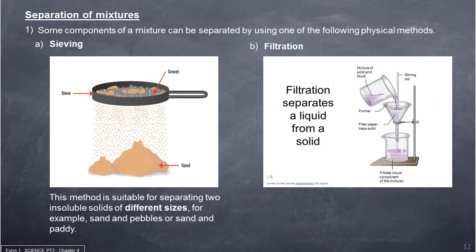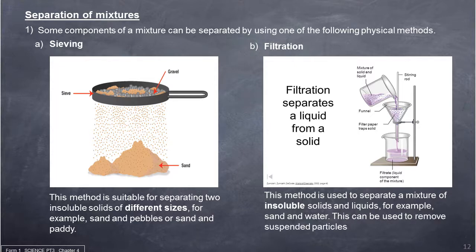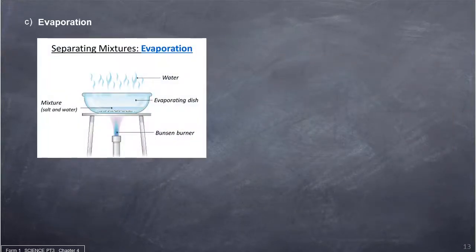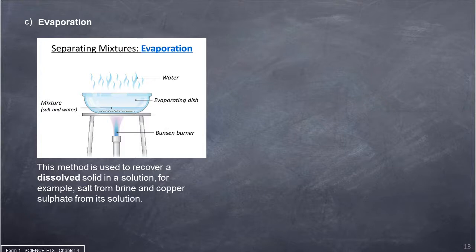Filtration is used to separate a mixture of insoluble solids and liquids, for example sand and water. This can also be used to remove suspended particles from tap water. Evaporation is used to recover a dissolved solid in a solution, for example salt from brine and copper sulfate from its solution.